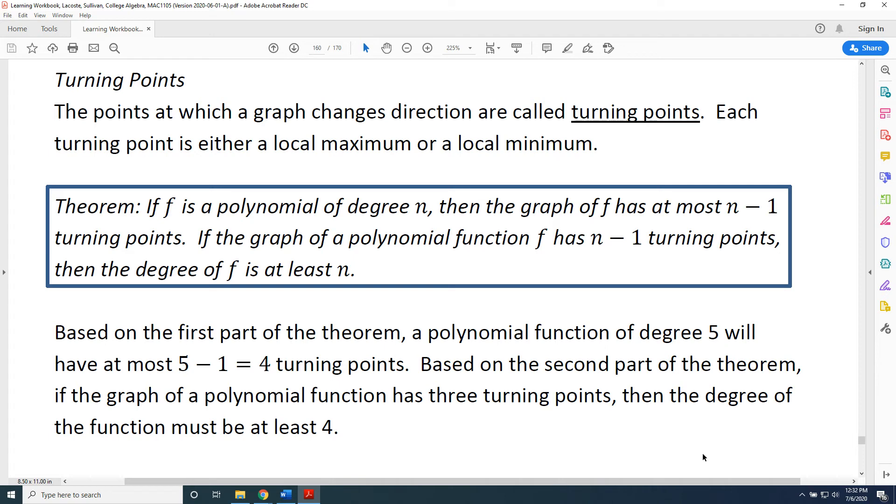Based on the first part of the theorem, a polynomial function of degree 5 will have at most 5 minus 1, which is 4 turning points. It could have 3 or 2 or 1 or 0, but the most it could have would be 4.